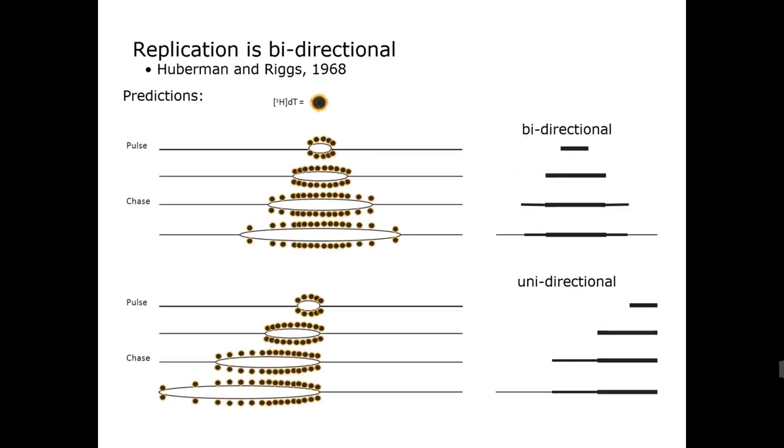All right. So now let me just give you a sense of what the prediction is from this sort of experiment and sort of explain why they're actually doing it in this way. And I actually believe I misspoke in the previous slide where I said that this experiment took place in 1978, but it was 1968. So do make that correction in your notes.